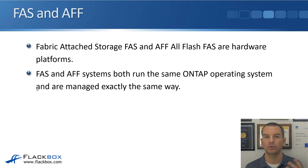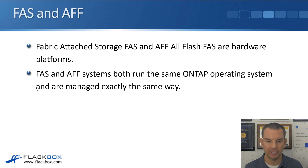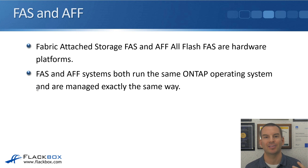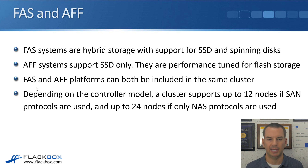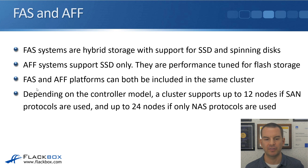The first platforms are FAS and AFF. FAS stands for Fabric Attached Storage, and AFF is All Flash FAS. These are both hardware platforms that run exactly the same ONTAP operating system and are managed exactly the same way. The difference is that FAS systems are hybrid storage, meaning they support both SSD disks and spinning disks — your SAS and SATA drives. AFF systems support SSD only. SSDs are flash drives, which is why it's called All Flash FAS, and these are performance-tuned for flash storage.